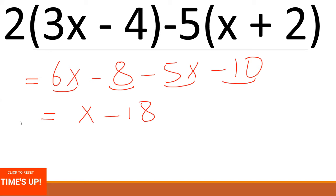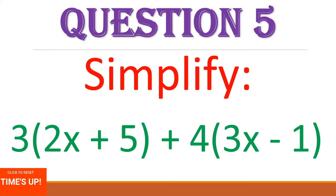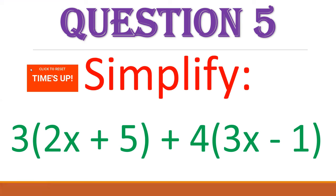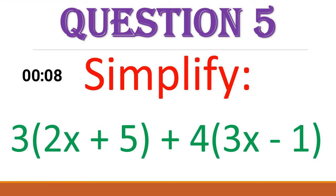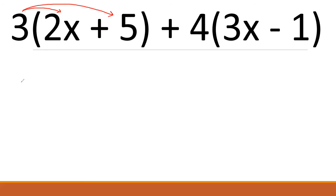Question 5 — last question for today. Another simplify question. Get your 20 seconds to try. Time's up. Let's answer together. Step 1: 3 times 2X gives 6X. 3 times 5 gives 15. Then 4 times 3X gives 12X. And 4 times 1: because plus times minus is negative, giving minus 4.